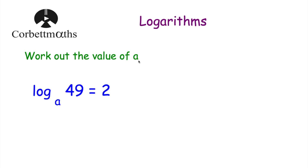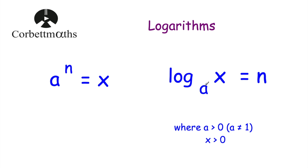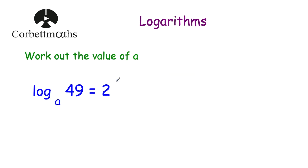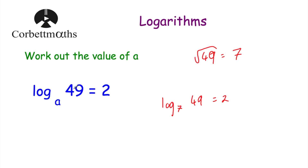Question 1: work out the value of a. We have log to base a of 49 is equal to 2. The power is 2, so a squared equals 49. Remember a must be greater than 0 and not equal to 1, and x must be positive. The square root of 49 is 7, so a equals 7. Log to base 7 of 49 equals 2 because 7 squared is 49. Note that a cannot be negative 7 since the base must be positive.